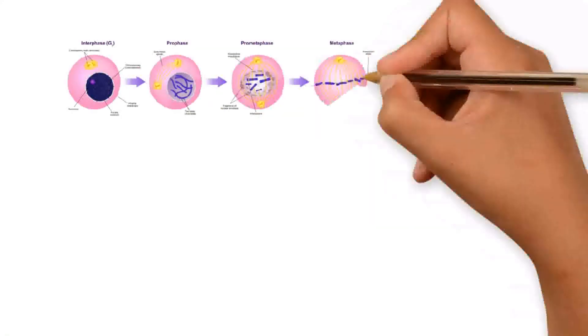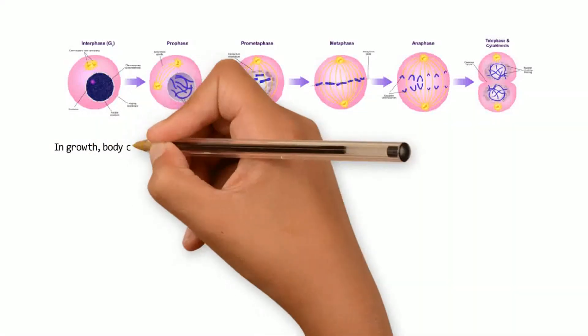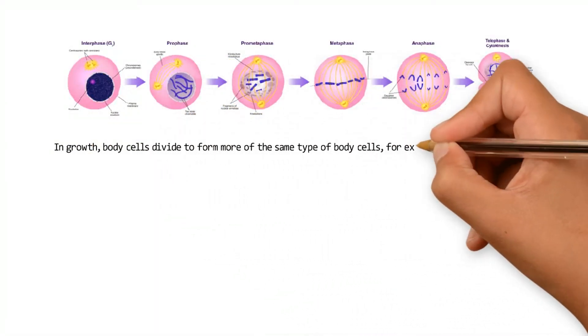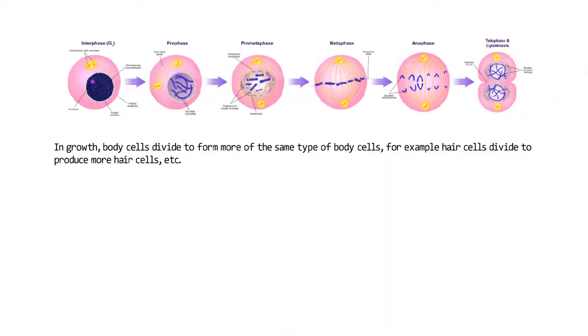For example, in growth body cells divide to form more of the same type of body cells. For example, hair cells divide to produce more hair cells.